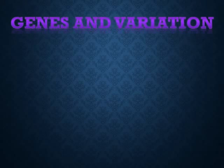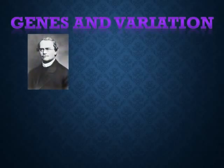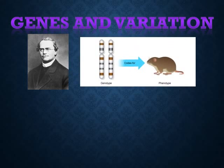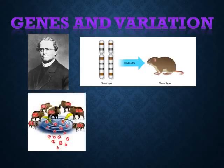Darwin developed his theory of natural selection without knowing how heredity worked. Mendel's studies on inheritance in peas were published during Darwin's lifetime, but no one, including Darwin, realized how important that work was. After Mendel's work was rediscovered around 1900, genetics took off rapidly. Researchers discovered that heritable traits are controlled by genes carried on chromosomes, and learned how changes in genes and chromosomes generate variation.